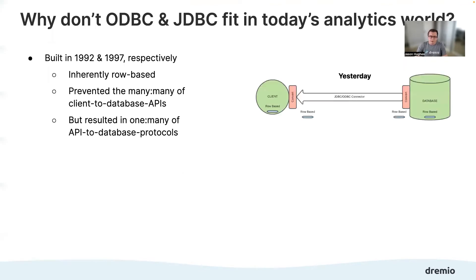Why don't ODBC and JDBC fit today's analytics world? Going back in history: ODBC's first release was 1992, JDBC first released in 1997. In that world, most of the many-client to many-database requirements were row-based. It was either OLTP workloads or certainly some OLAP workloads as well, but most of those weren't returning a lot of data to the client because the client wasn't doing a lot of logic on that stuff.